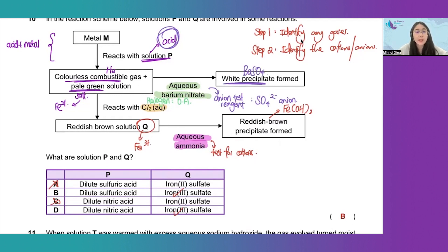This tells us that solution P must have—the salt solution must contain sulfate. The pale green solution is Fe2 sulfate. This means that solution P must also contain sulfate ion.